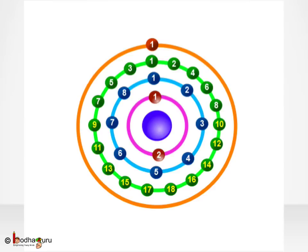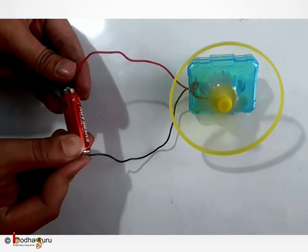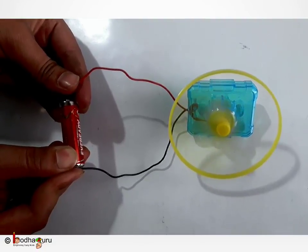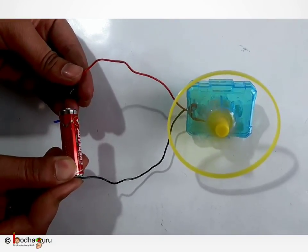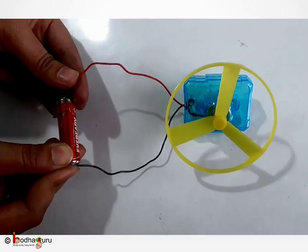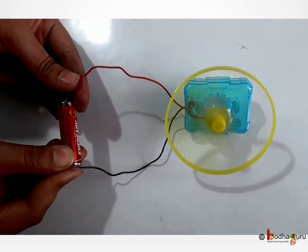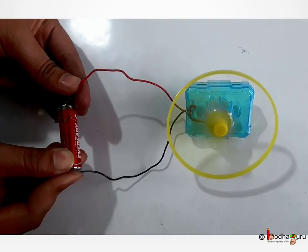And the copper wire is the conductor, that is, it is allowing electric current to flow through it easily. So electric current is the flow of electrons through the conducting material. And we will learn more about it in the next lesson. Till then, bye bye.